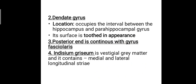The dentate gyrus occupies the interval between the hippocampus and the parahippocampal gyrus. It has a toothed surface appearance, which gives it its name. Its posterior end is continuous with the gyrus fasciolaris. The indusium griseum is a vestigial gray matter containing two parts: the medial and lateral longitudinal striae.